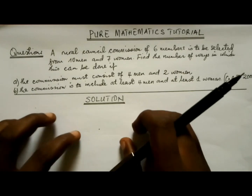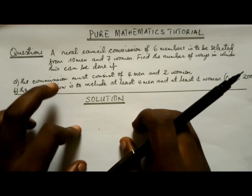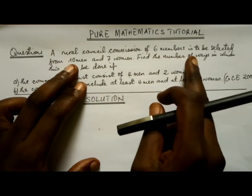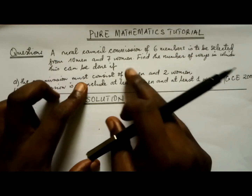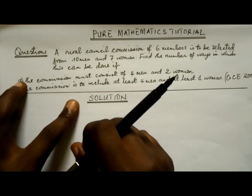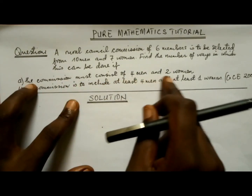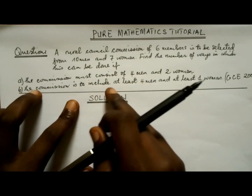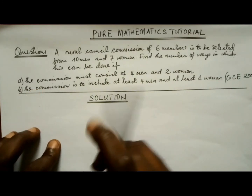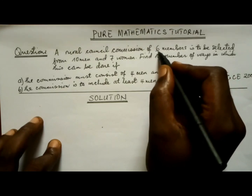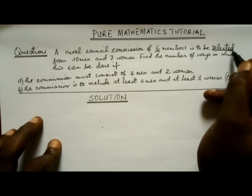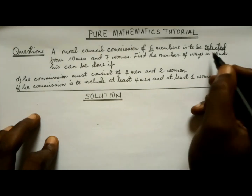Hi, Jemason Tutorials. In this question, a rural council commission of six members is to be selected from ten men and seven women. We need to find the number of ways this can be done. The key word here is 'selecting' — selections go with combinations, so we are dealing with combinations in this question.